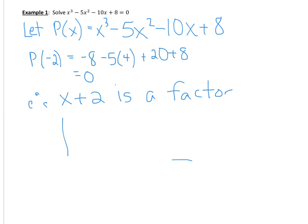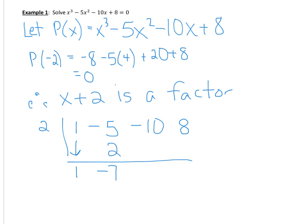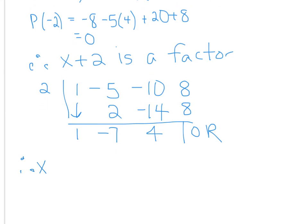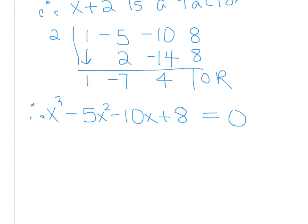We're ready with our first factor, so we can go ahead and set up our synthetic division. We have our 2, we take our coefficients. Bring down our 1, multiply by 2, we subtract to get negative 7. Negative 7 times 2 is negative 14. This becomes negative 10 plus 14, which gives us positive 4. Times 2 gives us 8 — remainder of 0. So what we have so far is x cubed minus 5x squared minus 10x plus 8 equals 0, and that factors to be x plus 2 times the quotient x squared minus 7x plus 4 equals 0.